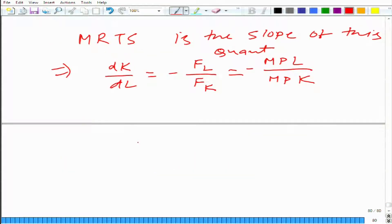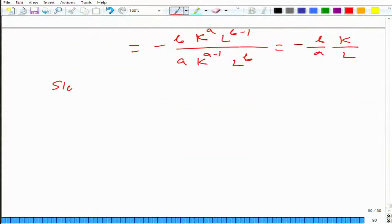What is the marginal product of labor in this case? b times k to the power a times l to the power b minus 1. And the marginal product of capital is a. We get b over a times l over k. This should be the same as the slope of iso-cost line, which is minus w by r.